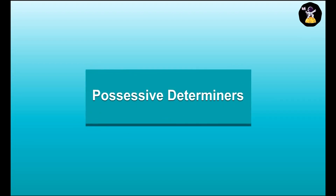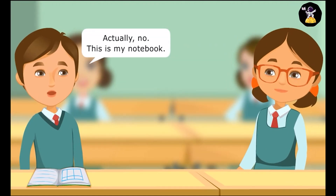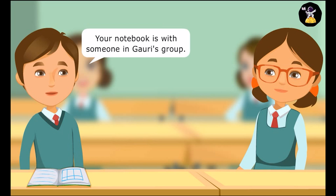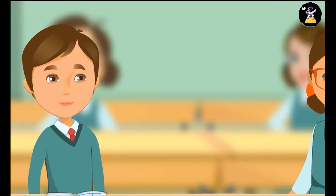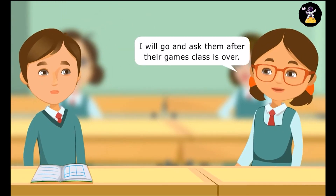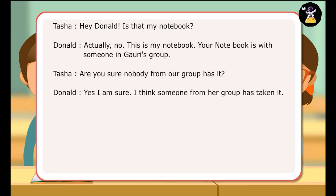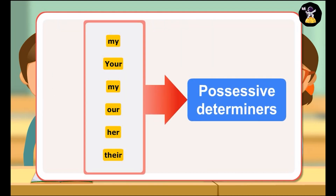Possessive Determiners. Hey Donald, is that my notebook? Actually no, this is my notebook. Your notebook is with someone in Gauri's group. Are you sure? Nobody from our group has it? Yes, I am sure. I think someone from her group has taken it. I will go and ask them after their games class is over. In the dialogues, Tasha and Donald have used words that give information about the nouns that follow in terms of possession. The words my, your, our, her, and their are examples of possessive determiners.